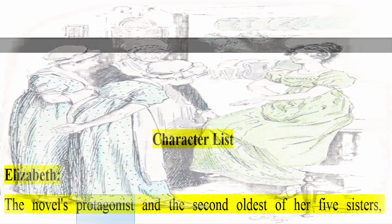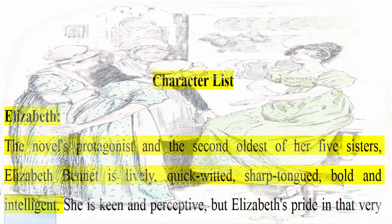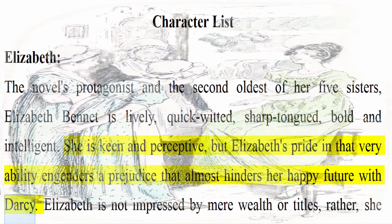Character List. Elizabeth: The novel's protagonist and the second oldest of her five sisters, Elizabeth Bennet is lively, quick-witted, sharp-tongued, bold, and intelligent. She is keen and perceptive, but Elizabeth's pride in that variability engenders a prejudice that almost hinders her happy future with Darcy. Elizabeth is not impressed by mere wealth or titles; rather, she values propriety, good manners, and virtue.